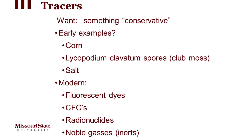We can also add noble gases — inert substances that don't react with other chemicals in the water. Helium is a noble gas, though it can bubble out of solution relatively easily. Fluorocarbons — CFCs or chlorofluorocarbons used in aerosol cans and refrigeration — are another option. Different versions of freon were developed over successive decades: freon 12, 13, 112, 113, each associated with different atmospheric eras, allowing us to estimate how far they've moved through the environment.